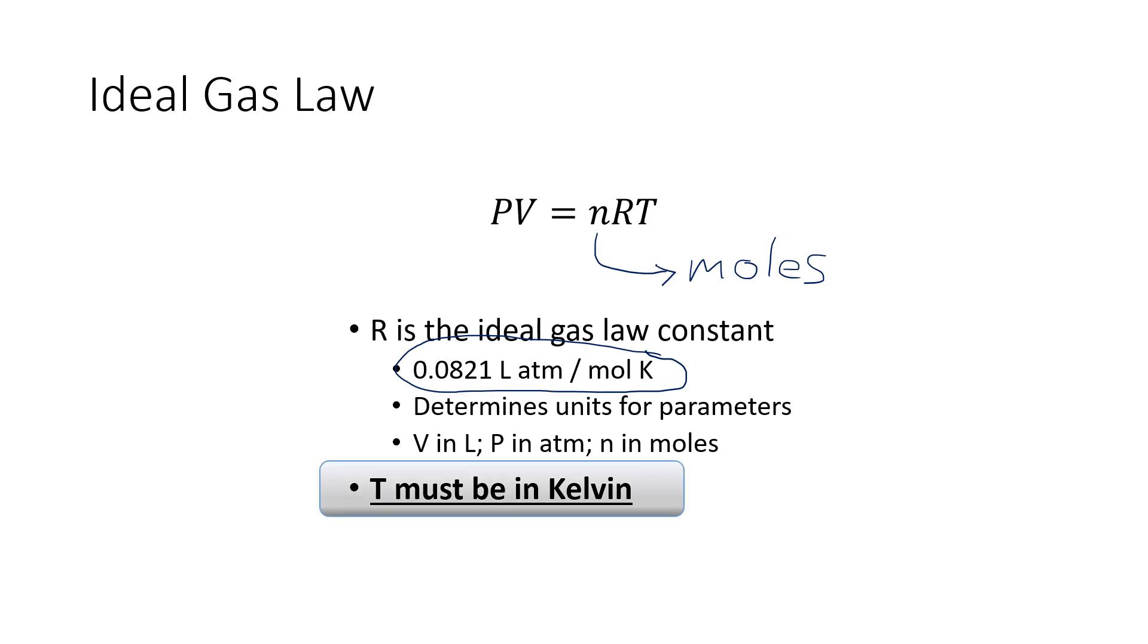The units on R, the ideal gas law constant, determine what units we can use for pressure, volume, and temperature. Volume has to be in liters to match the ideal gas law constant. Pressure has to be in atmospheres to match it, and then n has to be in moles to match. And for all gas law problems, T has to be in Kelvin.